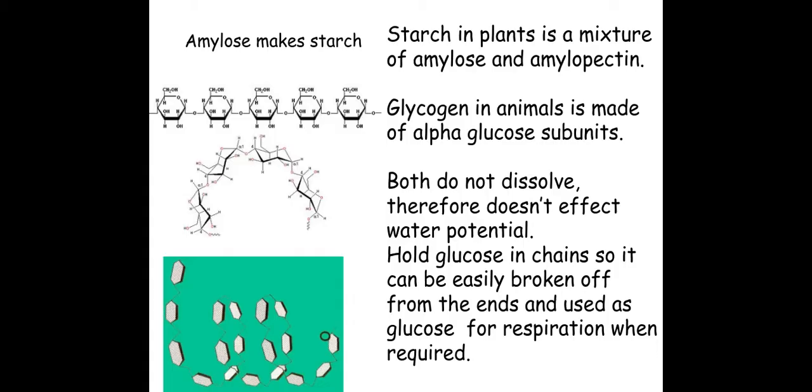Now starch is made up of two polysaccharides: amylose and amylopectin. Amylose, as you can see here, is made of alpha 1 to 4 glycosidic bonds. It's made of alpha glucose in a 1 to 4 glycosidic bond arrangement.